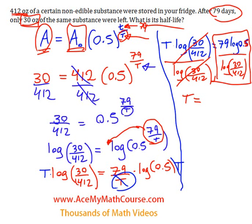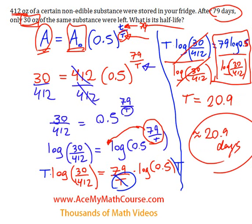Give me a second because I need to use my calculator. So 79 times log of half divided by log of 30 over 412 is 20.9. So the half-life of the substance is around 20.9 days. That's it.